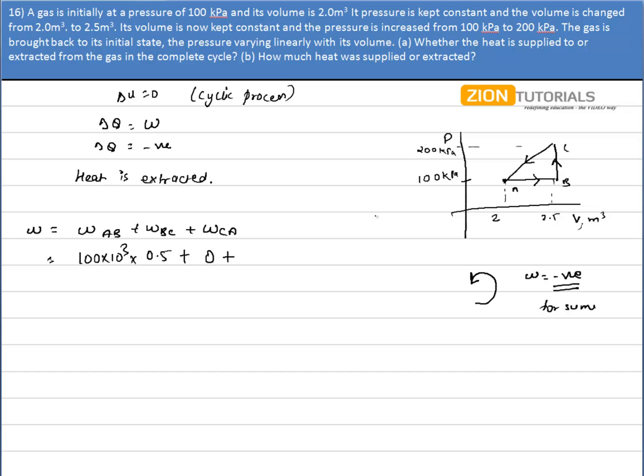Work done during CA can be calculated by the area under the curve. That is this much part. This gives me the work done during CA. So it equals to half of the sum of parallel sides, that is 100 plus 200 kPa, into distance between parallel sides, which is 0.5 meter cube.